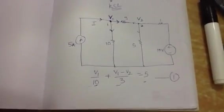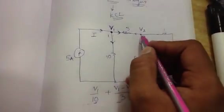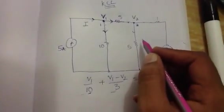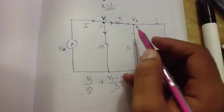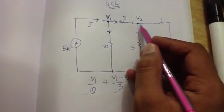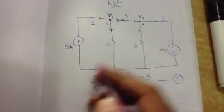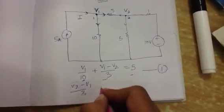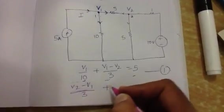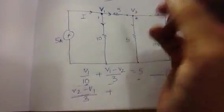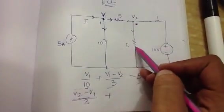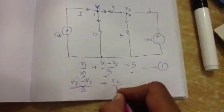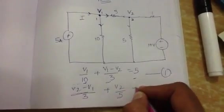Here comes the next equation, which is for the next node. What are the currents going out? It's V2 minus V1 by 3. Let's write it down. V2 minus V1 by 3, with clarity. Plus, see, this V2 by 5. 5 is totally independent, so it's only V2 by 5. Plus,